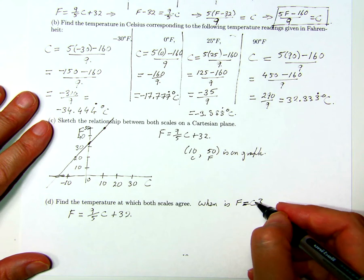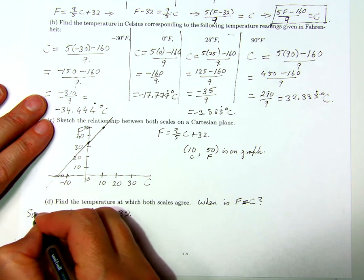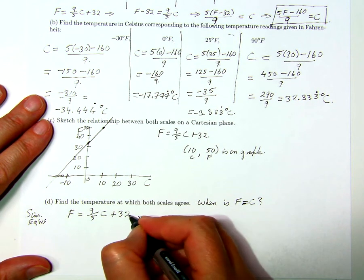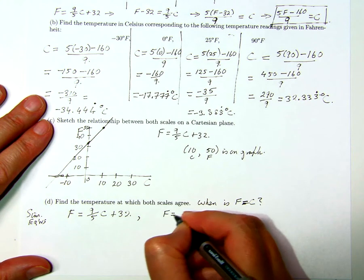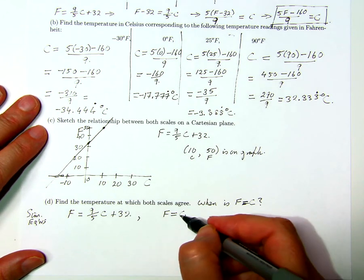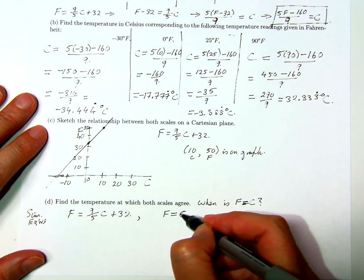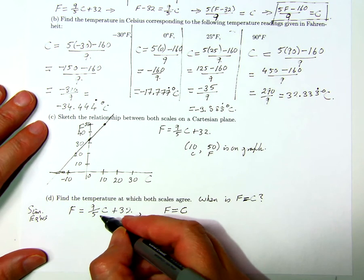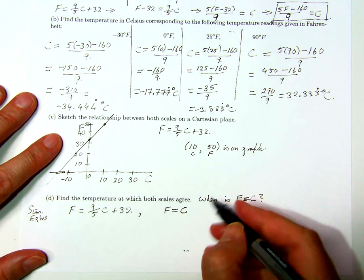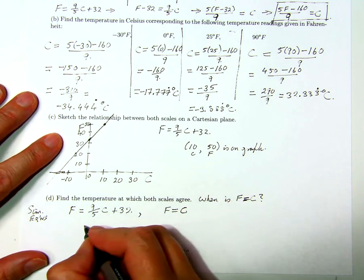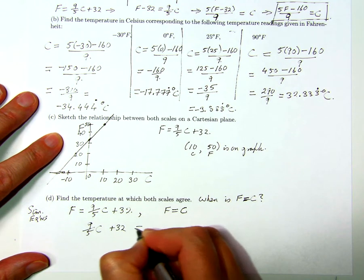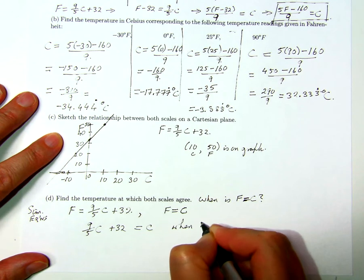We have simultaneous equations: F equals 9 over 5 times C plus 32, and F equals C. We solve for F in terms of C, then equate both expressions. F is always 9 over 5 times C plus 32, and when F equals C, we substitute to get: 9 over 5 times C plus 32 equals C.